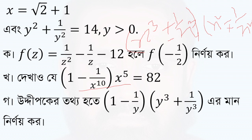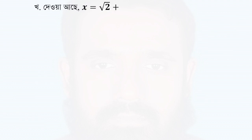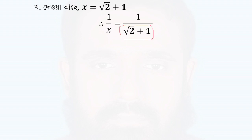The part is equal to minus 1 and 2. This is equal to root 2 plus 1. So 1 by x is equal to 1 by root 2 plus 1. We will rationalize this as 1 over root 2 plus 1, and rewrite it as root 2 minus 1.